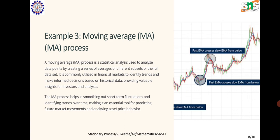Example 3: Moving average (MA) process. A moving average process is used to analyze data points by creating a series of averages of different subsets of the full data set. It is commonly utilized in financial markets to identify trends and make informed decisions based on historical data. The MA process helps in smoothing out short term fluctuations and identifying trends over time, making it an essential tool for predicting future market movements and analyzing asset price behavior.